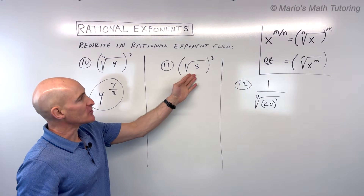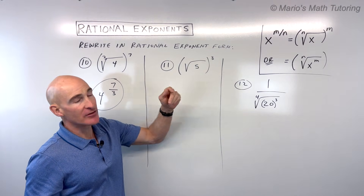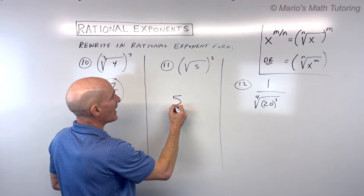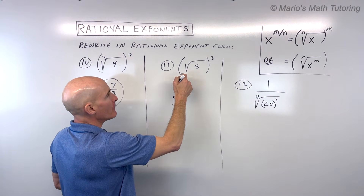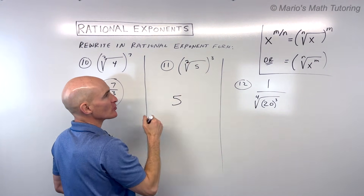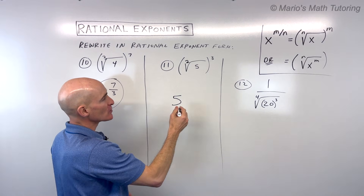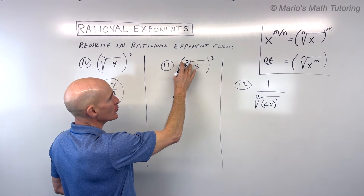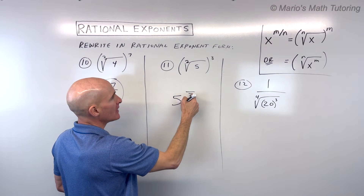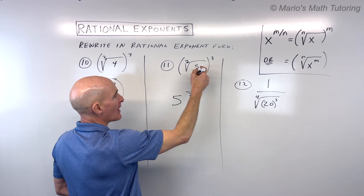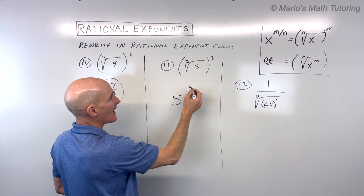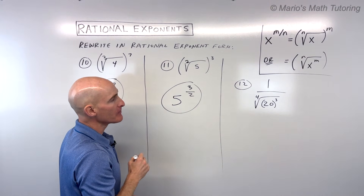For number 11, we've got the square root of 5 to the 3rd power. The base is 5. There's no index written, but it's understood to be 2 — the square root. That index goes in the denominator, and the power goes in the numerator, so this is 5 to the three-halves power.